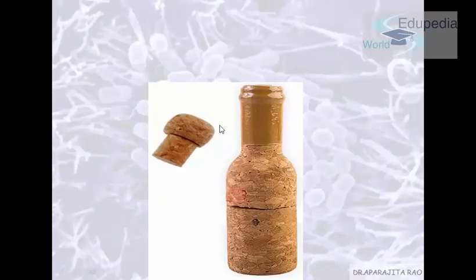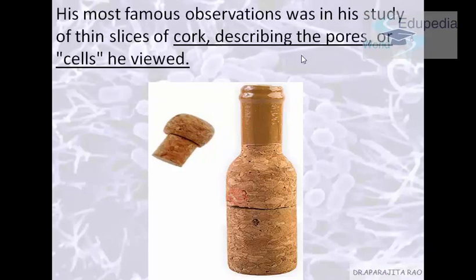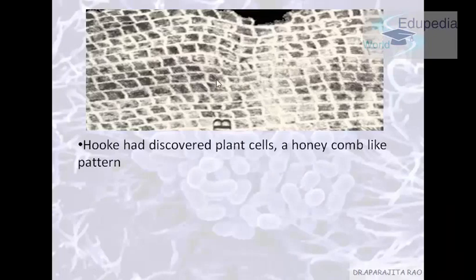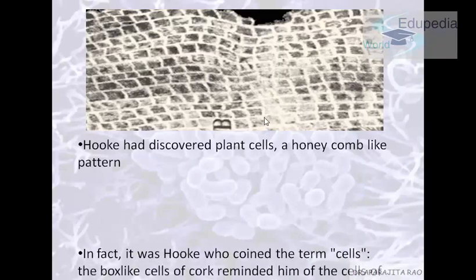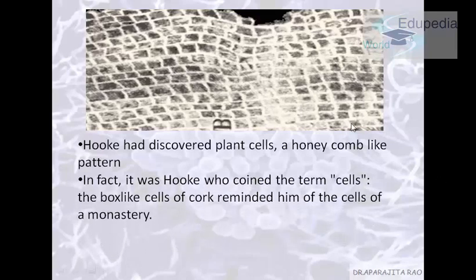He saw cork under the microscope and observed pores, or cells, as he called them. This is exactly what he saw and published in his book — a honeycomb-like pattern. He coined the term 'cells' for the first time. The box-like cells of cork reminded him of the cells, or rooms, of monks in a monastery.